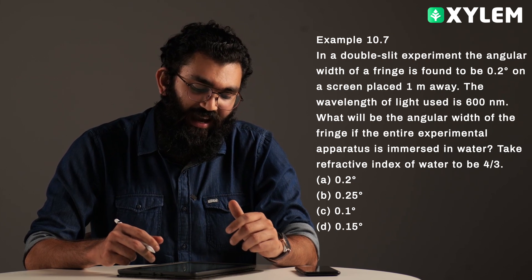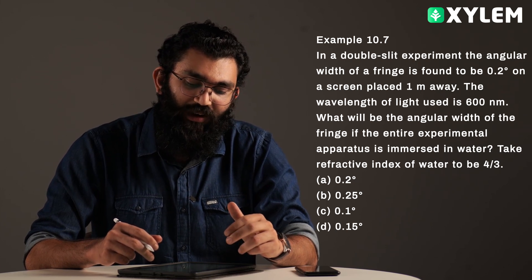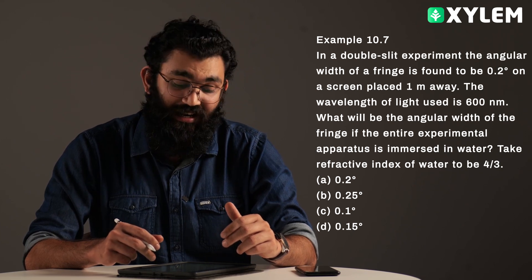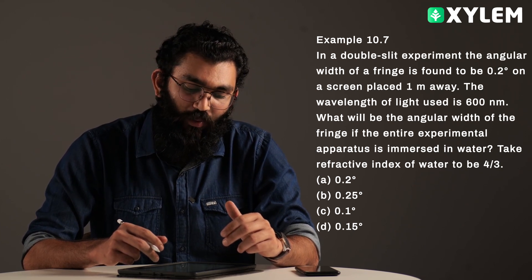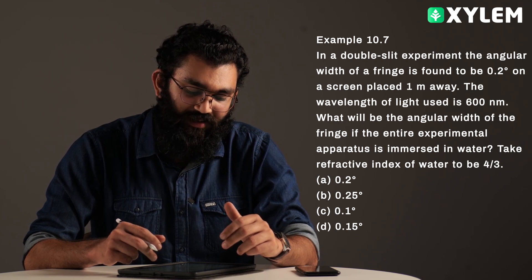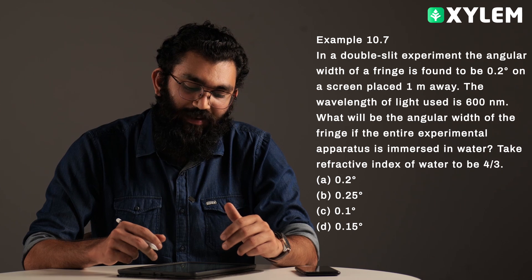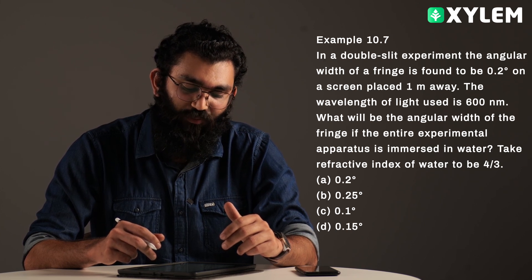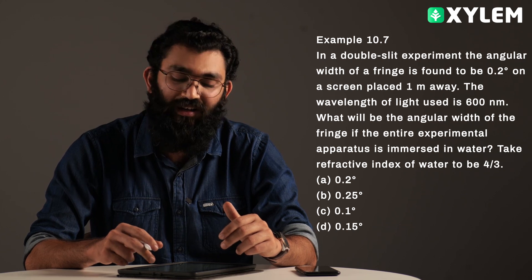Next, Example 10.7 from Waveoptics. In a double-slit experiment, the angular width of a fringe is found to be 0.2 degrees on a screen placed 1 meter away. The wavelength of light used is 600 nanometers. What will be the angular width of the fringe if the entire experimental apparatus is immersed in water? Take the refractive index of water as 4 by 3.